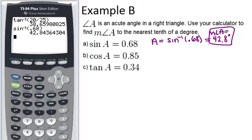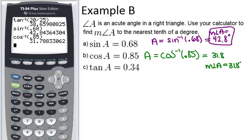For part B, we have cosine of angle A equals 0.85. So that means angle A equals cosine inverse of 0.85. And again, we're going to use our calculator to help us out. Second cosine to get our cosine inverse, 0.85. And we get 31.8 if we round it. So that means the measure of angle A equals 31.8 degrees.